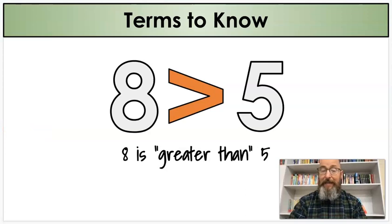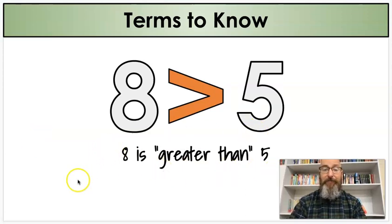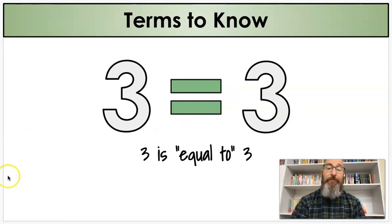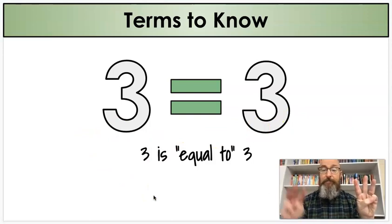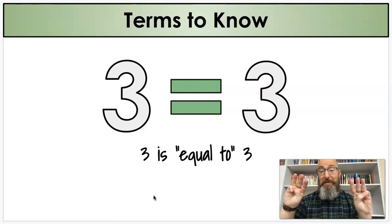I might say eight is greater than five, because eight is bigger than five. I'm always comparing these two numbers, so eight is greater than five. Or I might have three is equal to three, because it's the same number — they're equal to one another. If I have three over here and three over here, it's the same. Both have three.